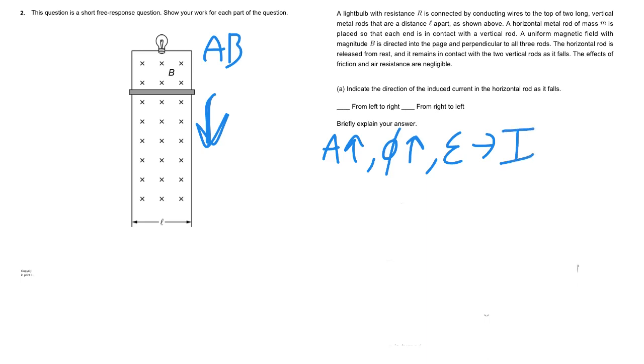So they want to know what direction that's going to be. Well as we said, the area is going up so the flux is going up, and remember according to Lenz's law, the current that is induced is going to create a B field that opposes the change.